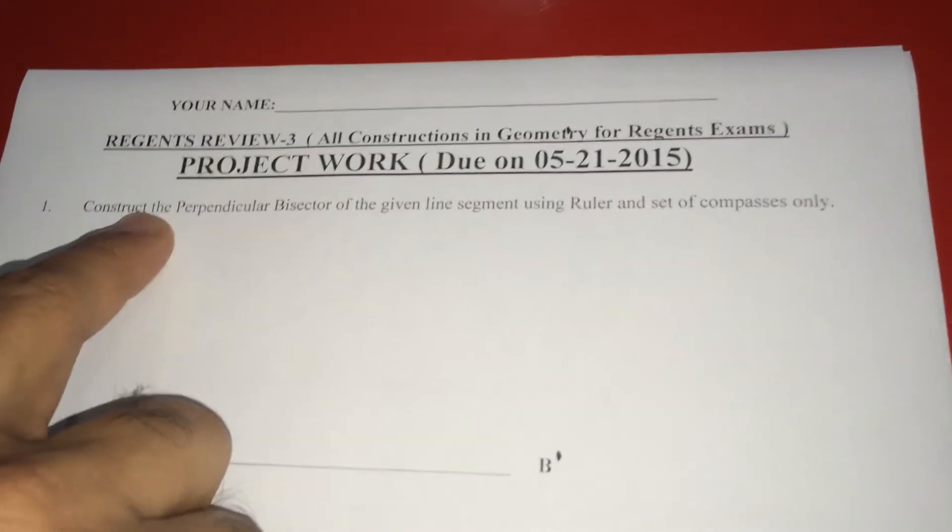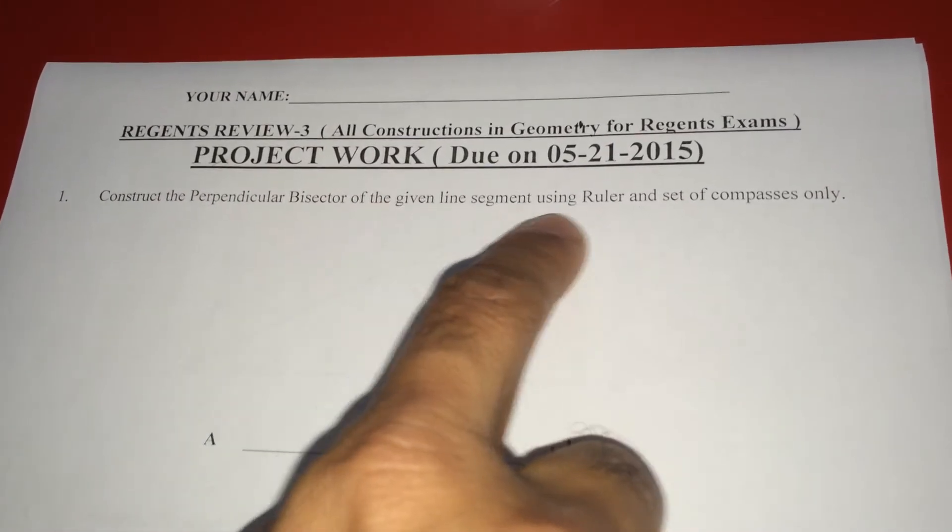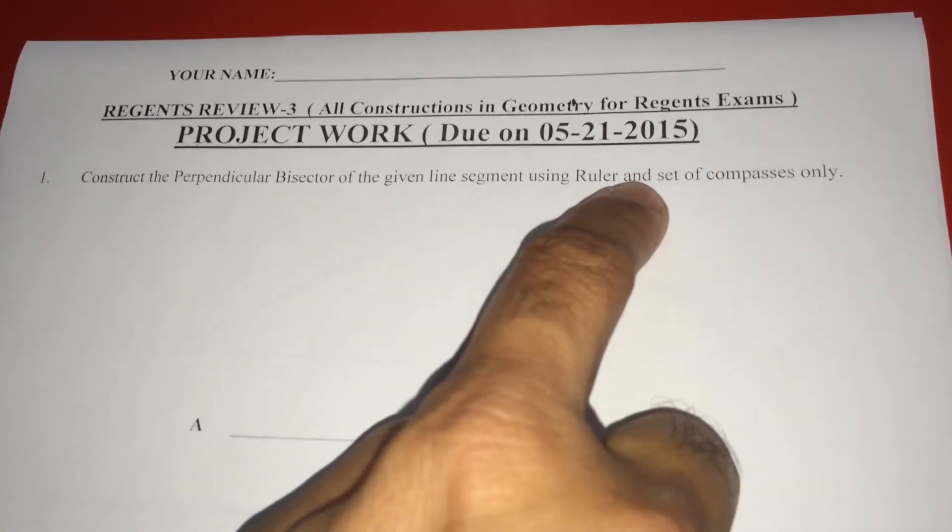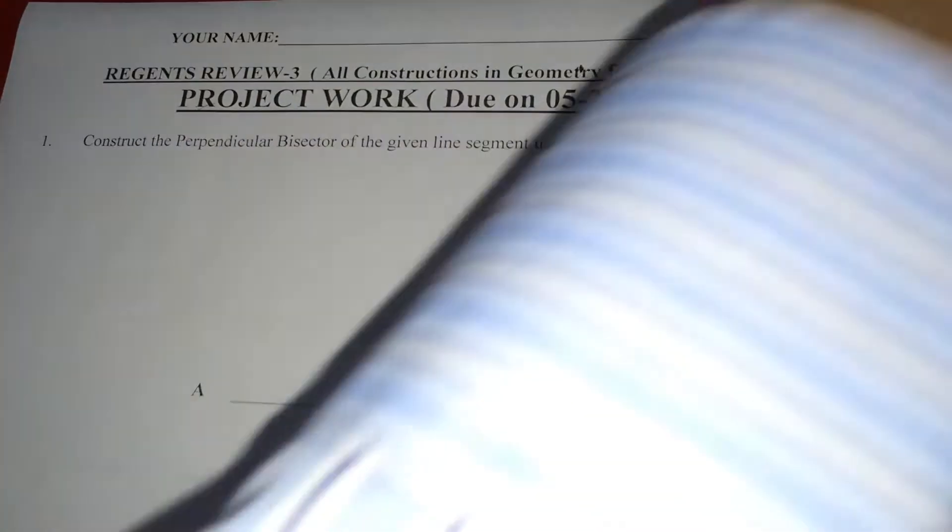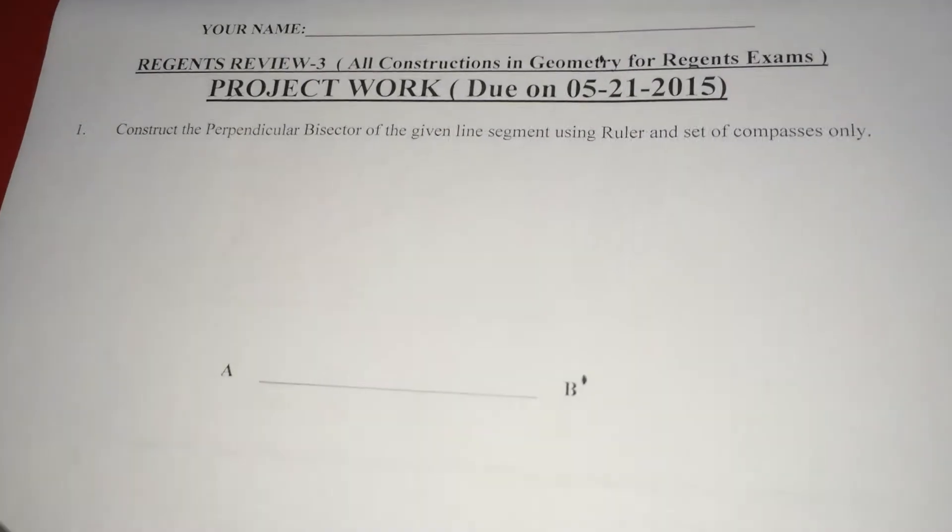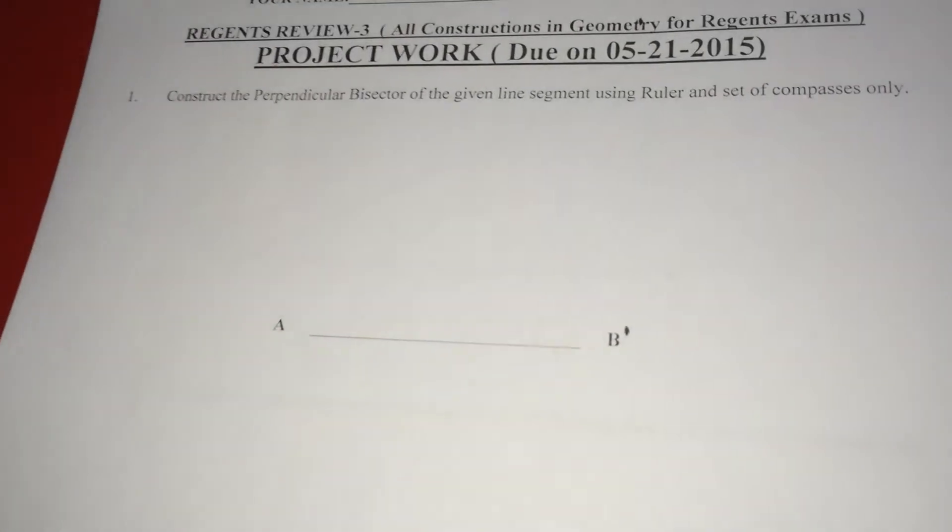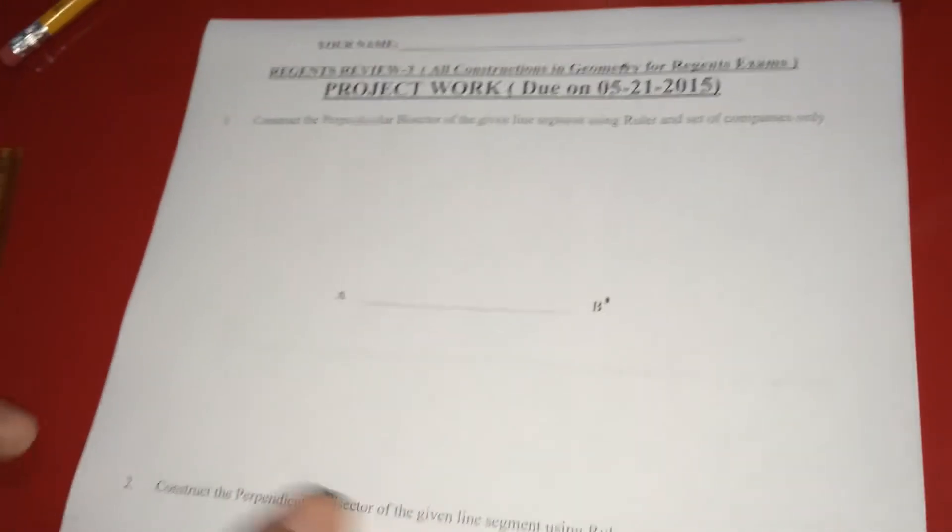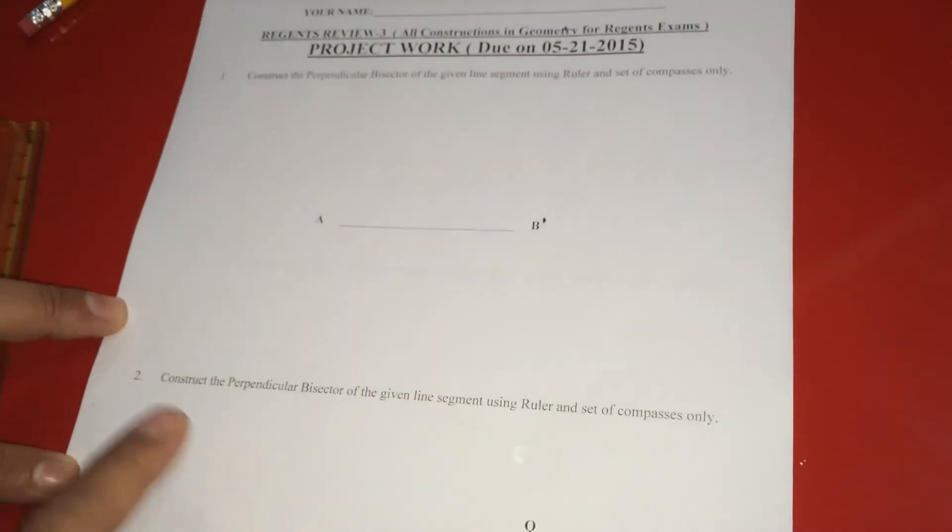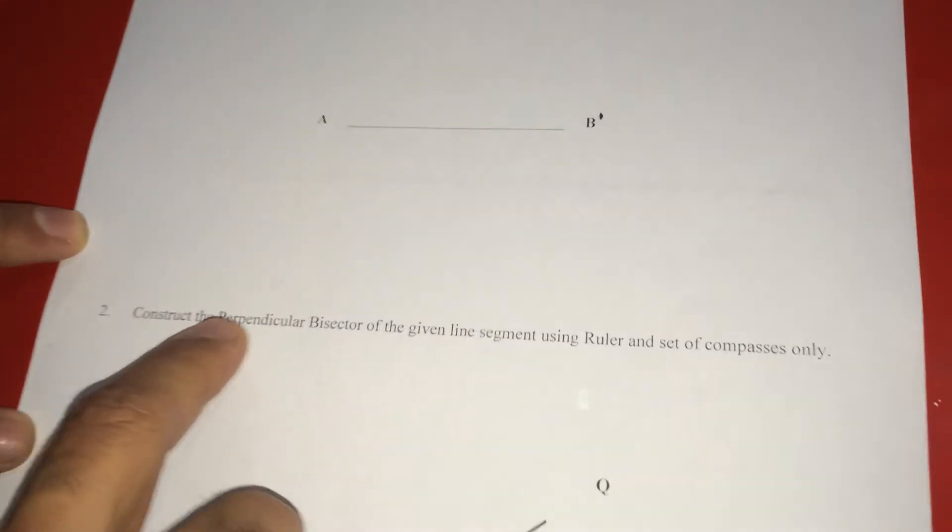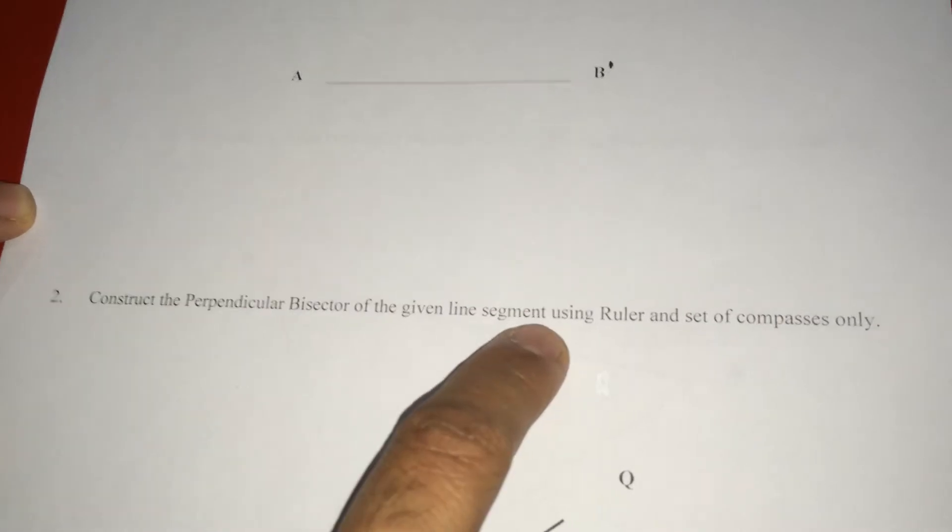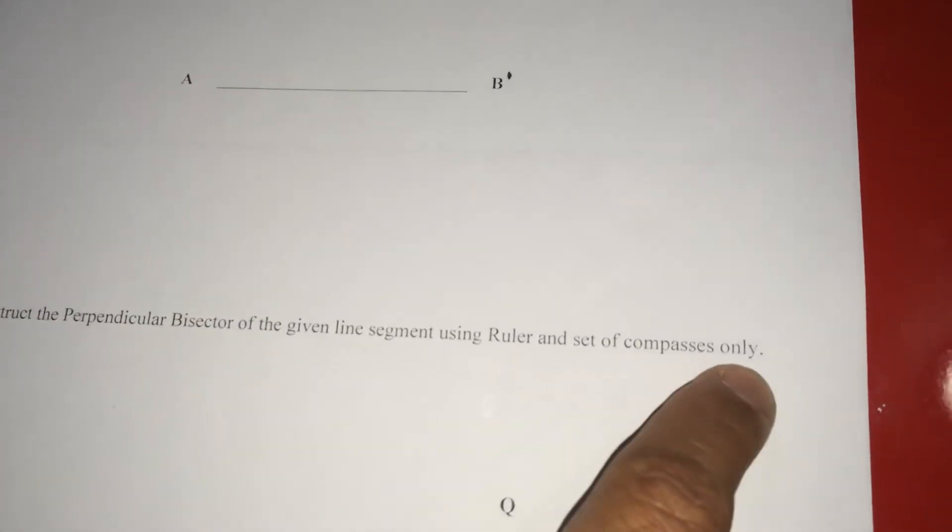So first question is, construct the perpendicular bisector of the given line segment using ruler and set of compasses only. So I am using this ruler and this is the set of compasses. So instead of doing first, both are same, first and second. What is the second one? Construct the perpendicular bisector of the given line segment using ruler and set of compasses only.